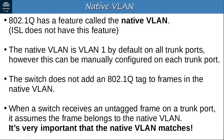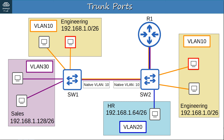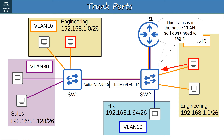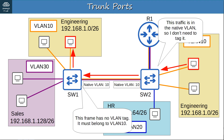Here's an example with the native VLAN configured as VLAN10 on the trunk between SW1 and SW2. A VLAN10 PC sends traffic to SW2. SW2 sends it to SW1, but because it is in the native VLAN (VLAN10), it won't tag it as VLAN10. The untagged frame arrives at SW1, which assumes it belongs to VLAN10 and forwards it to the destination.